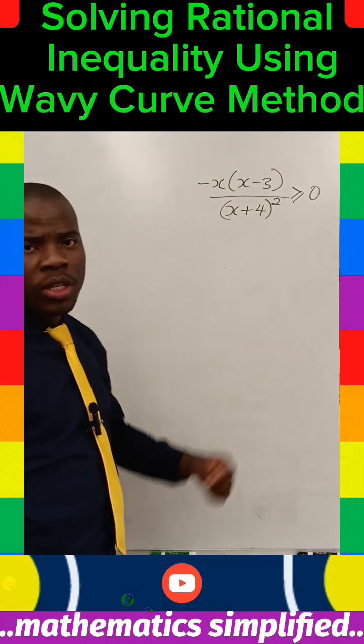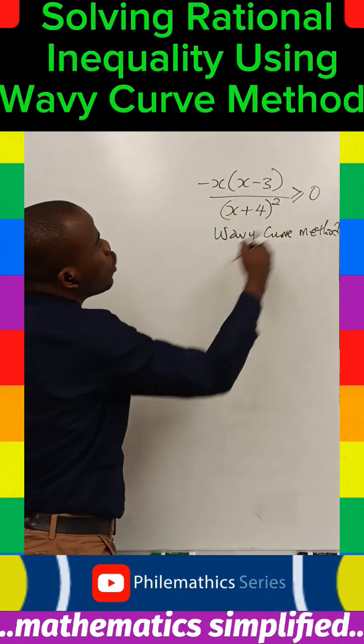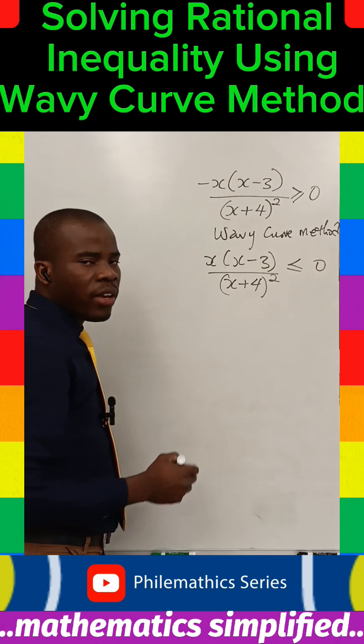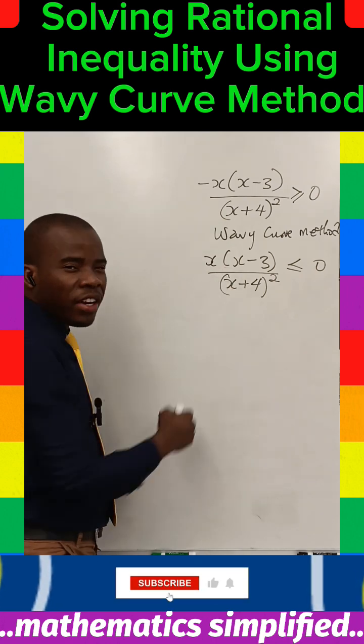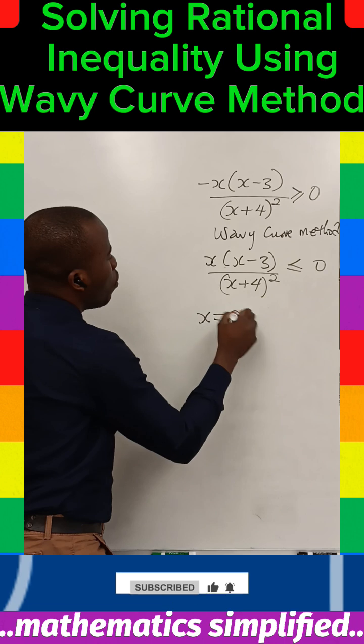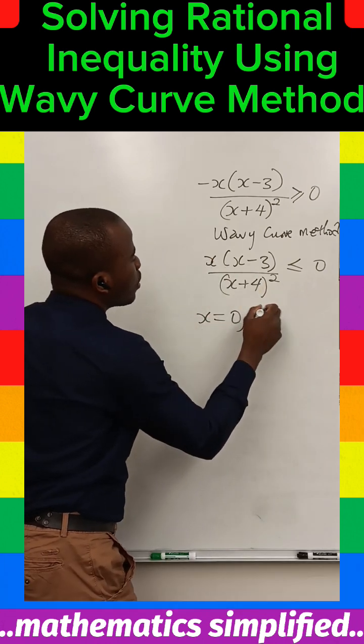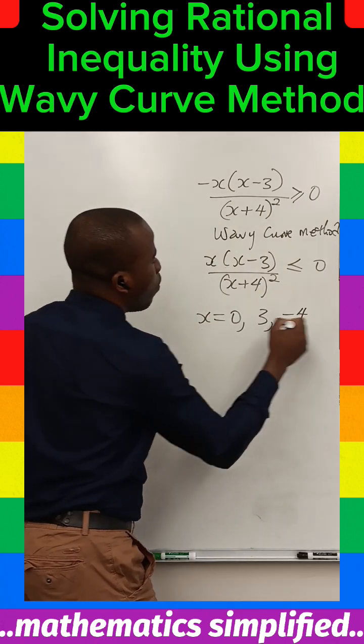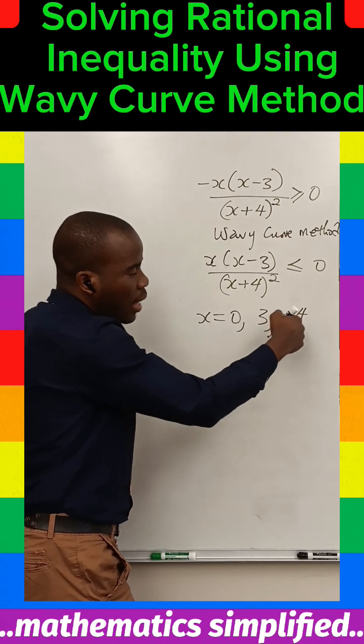Hello, let's solve this using the wavy curve method. We can multiply through by minus one. The first thing we want to do is look for the critical points. The critical points are x equals zero from here, from here equals three, and from here minus four.